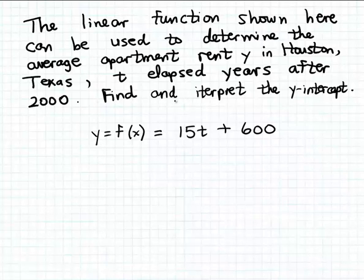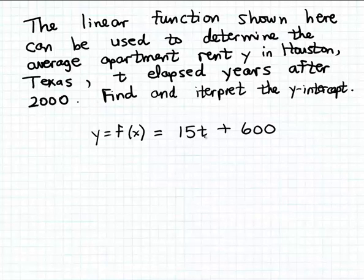What we want to do in this example is find the y-intercept of this function and then interpret that in a practical context. Because this is a linear function, it's fairly straightforward to determine the y-intercept. In a linear function, the y-intercept is always just the constant in the formula. A linear function formula is always of the form: coefficient times the input variable, plus or minus some constant. In this case, we can easily identify the constant — that's 600.